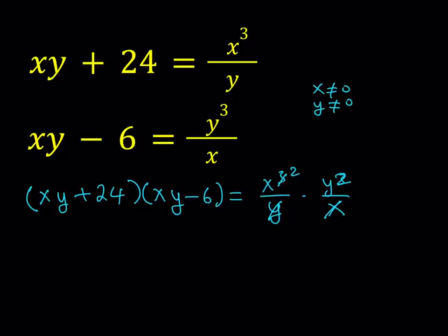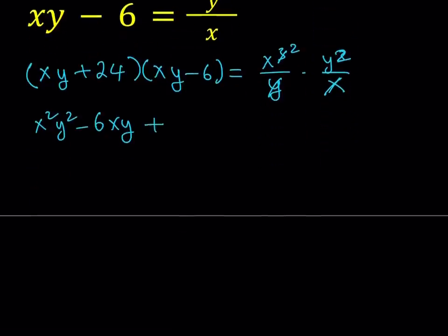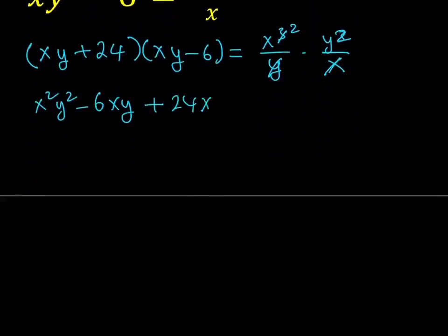If you distribute the left hand side, you get x squared y squared minus 6xy plus 24xy minus 144. And on the right hand side, you get x squared y squared, which is really nice.